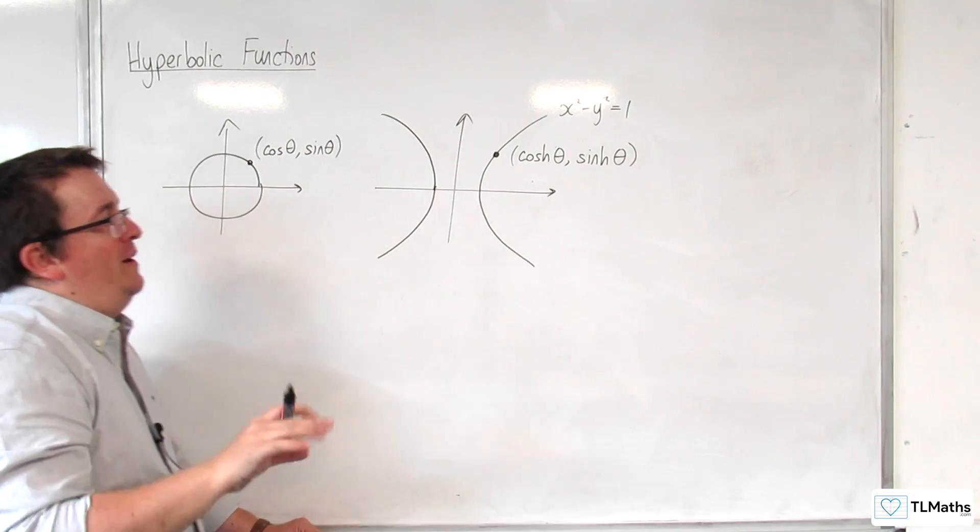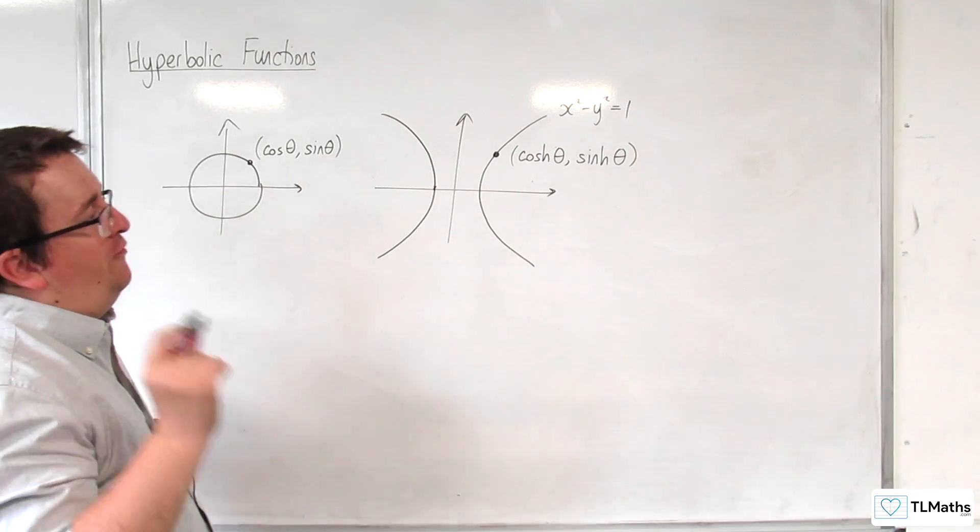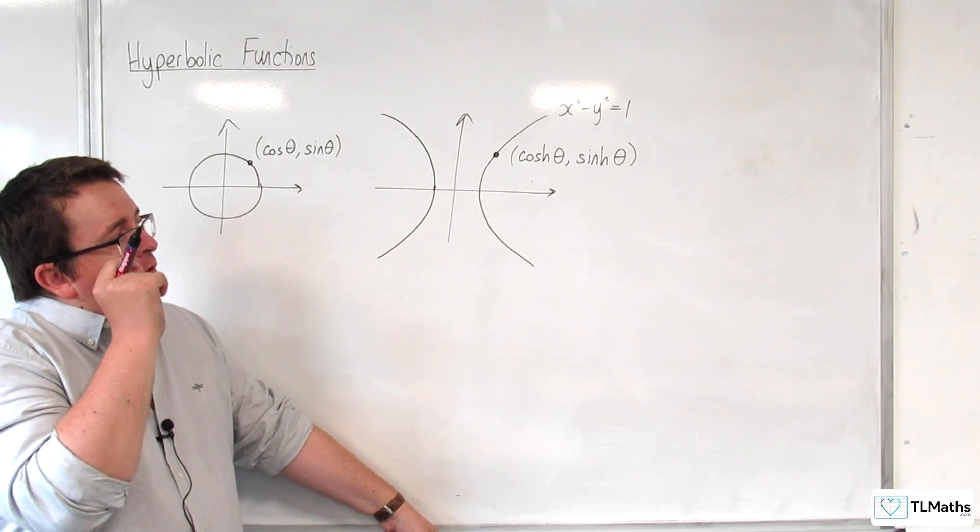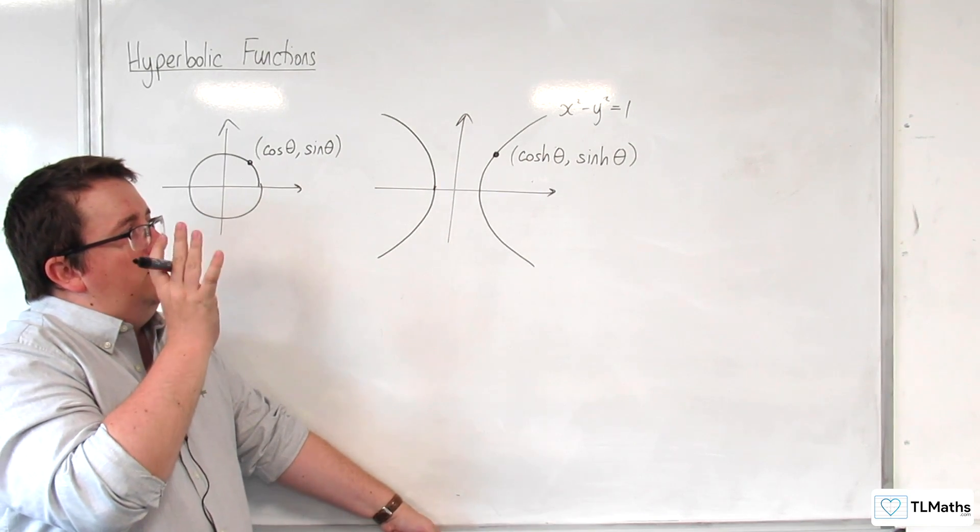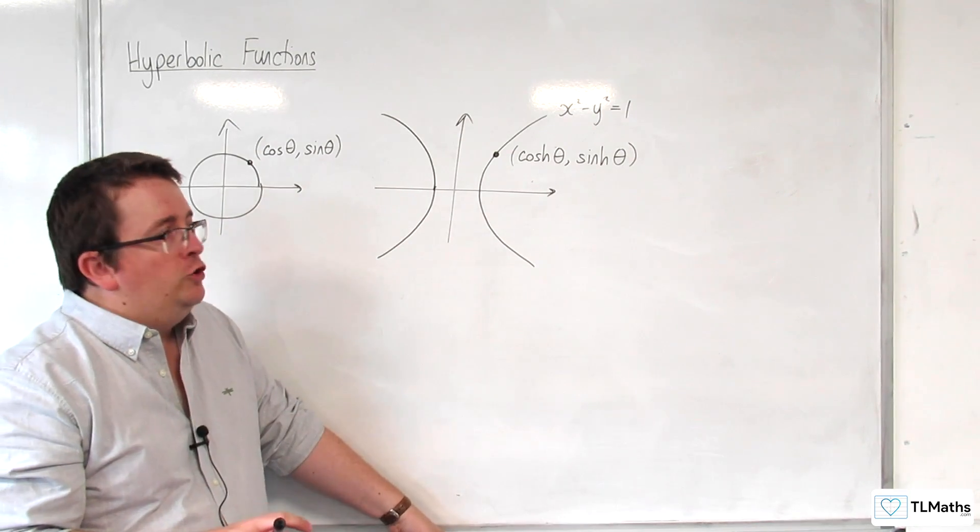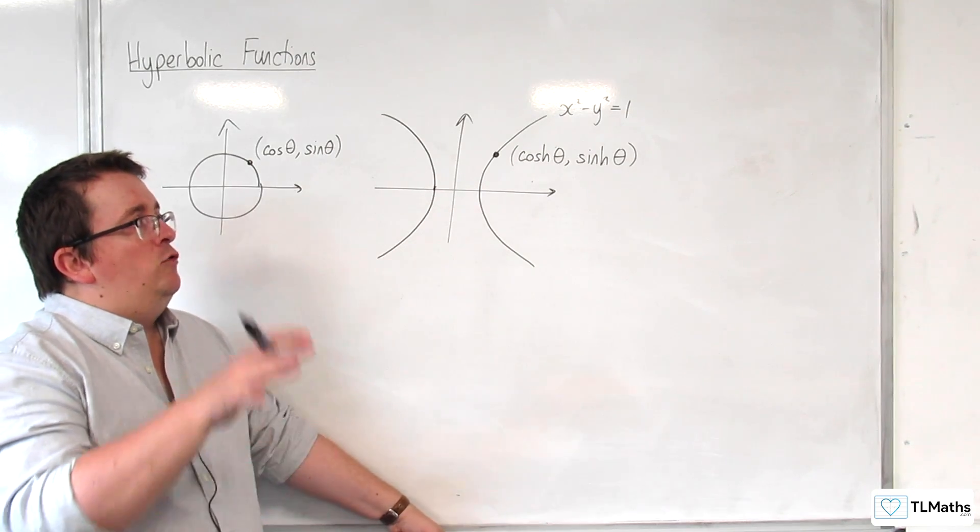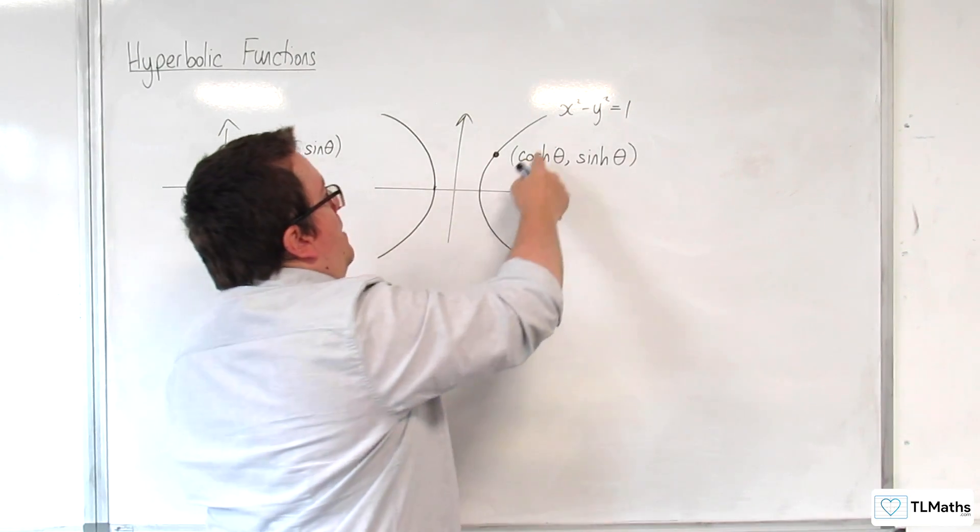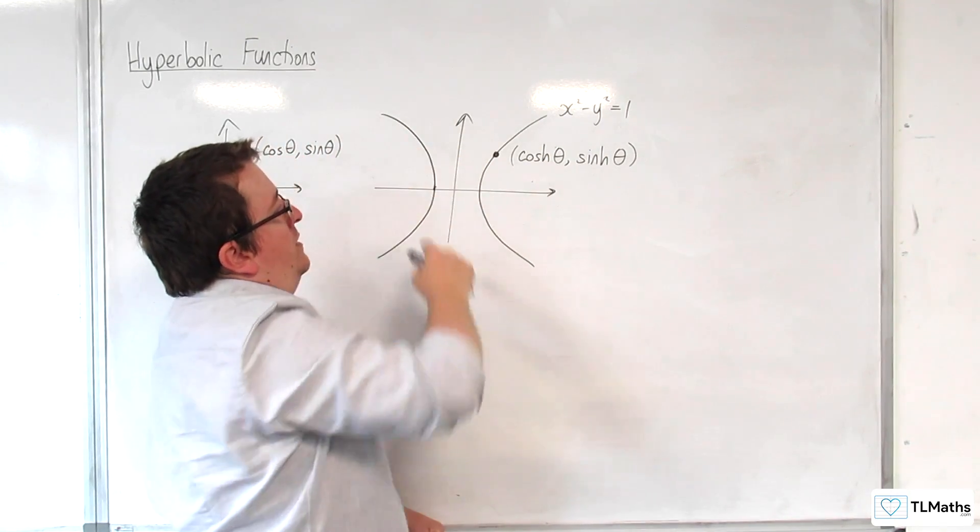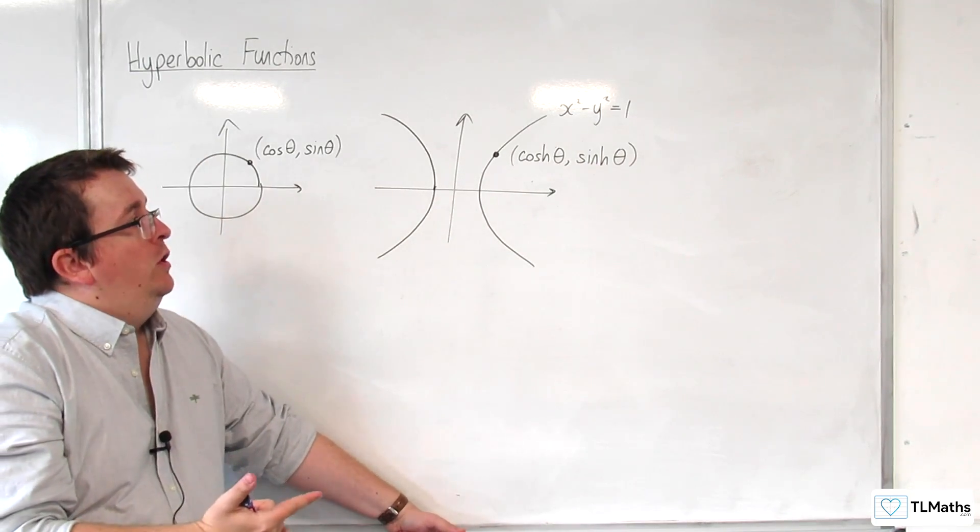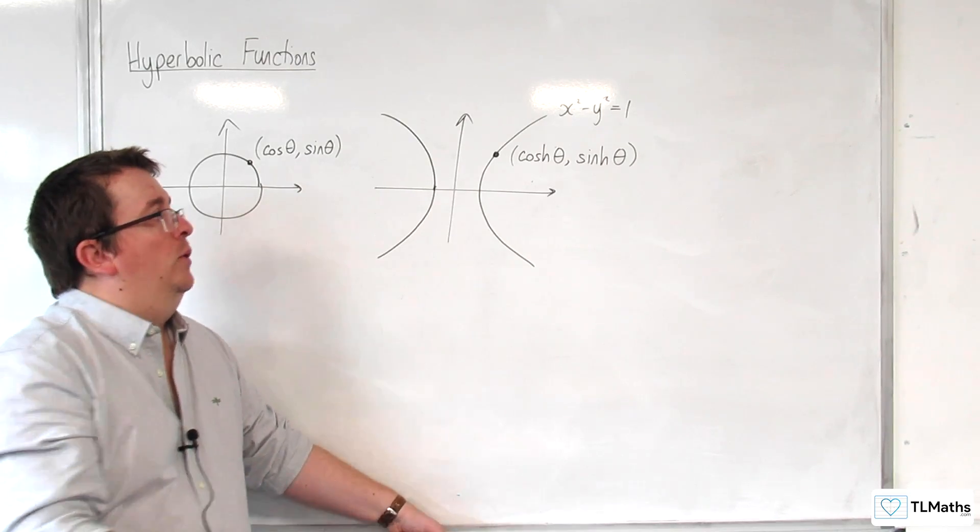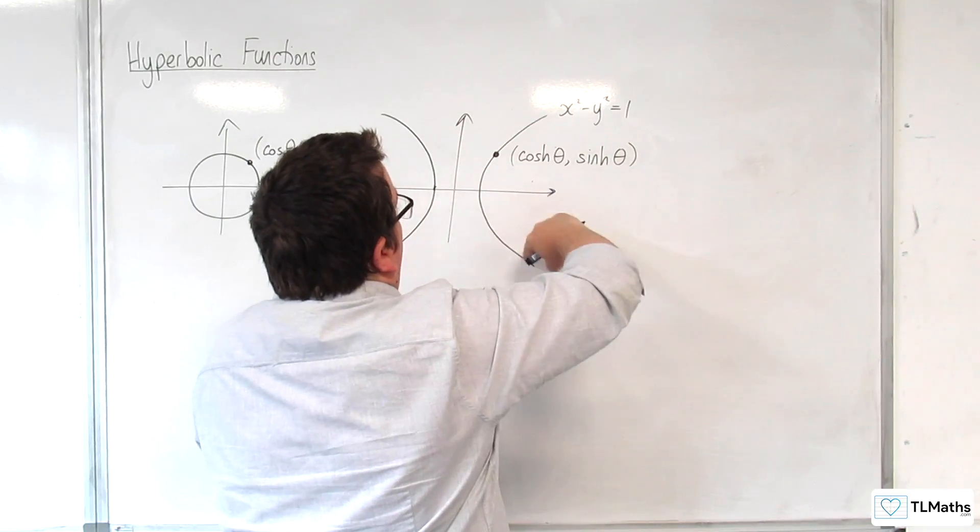I'm going to try and head that one off at the pass. Before I do that, what you need to be clear on here is that we're referring to these as the hyperbolic functions, or two of the hyperbolic functions, because they are related to the hyperbola. Now, they only parameterize this portion of the graph, rather than that one, because cosh is only ever positive. And so, you only get that half of the graph.